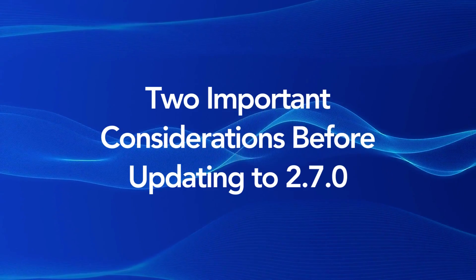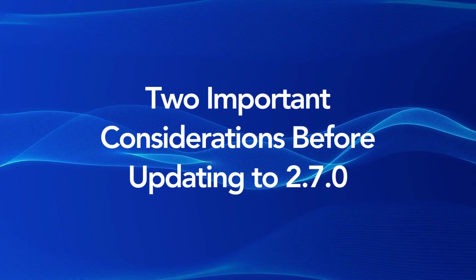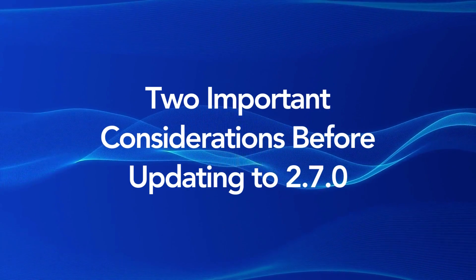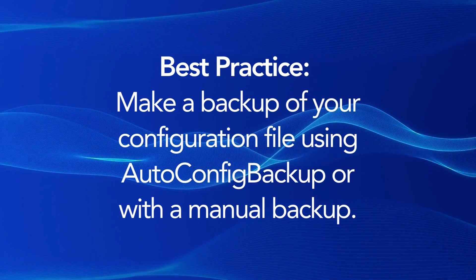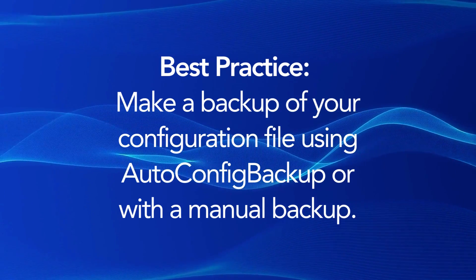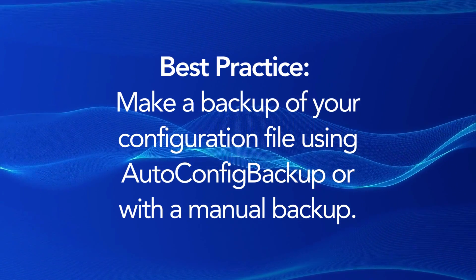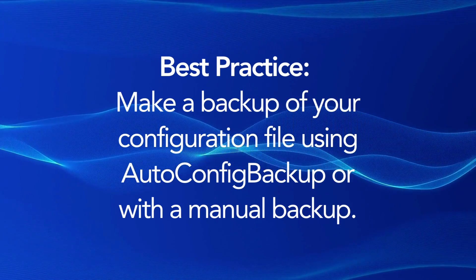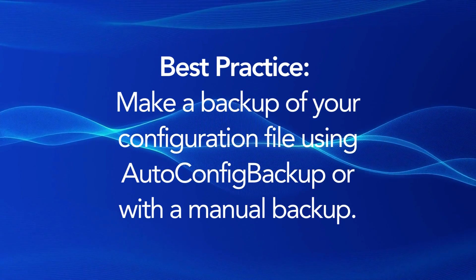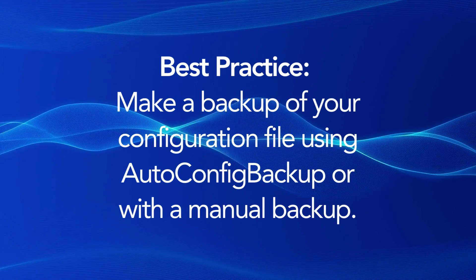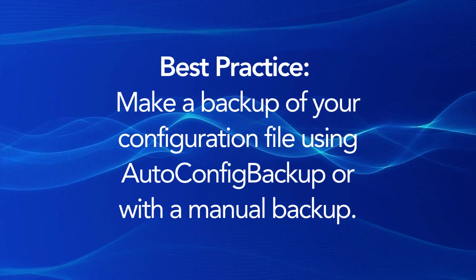Upgrading to 2.7. There are two important things I have to cover before you start to upgrade to 2.7. Number one is to back up your configuration. NetGate provides a free way to do this through Auto Configuration Backup, or ACB, which will enable you to back up your configuration remotely. Otherwise, backing up your configuration in another way is totally adequate. Do make a backup of your configuration before upgrading — this is always the best practice.